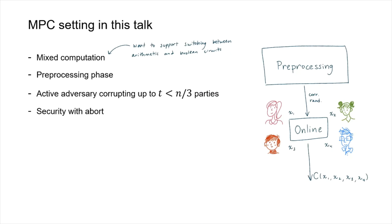The adversary we consider is an active adversary which may deviate arbitrarily from the protocol, and we assume this adversary corrupts less than a third of the parties. T is going to be the corruption threshold and n is the total number of parties. We also allow the adversary to abort at any point in the protocol.